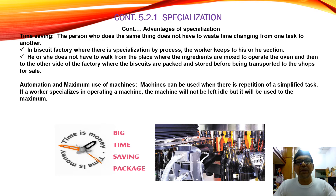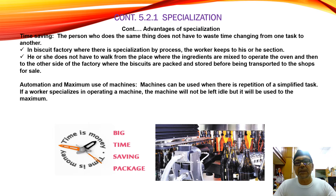Automation and maximum use of machine: machines can be used where there is repetition of simplified work. If a worker specializes in operating a machine, the machine will be used to maximum. Some of the jobs of human beings can be replaced by machines because it is the same repetitive job — no need to use your brain, no need to use your imagination. Now we have machines taking the place of human beings doing specialization on jobs.